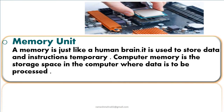The third component is the Memory Unit. Memory is just like a human brain. It is used to store data and instructions temporarily. Computer memory is the storage space in the computer where data to be processed is held.